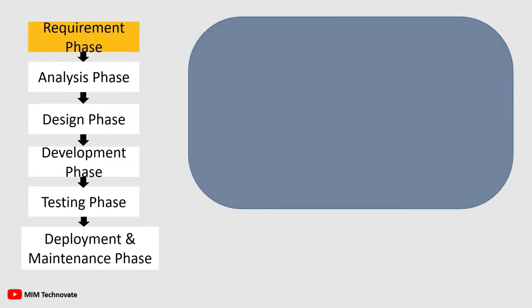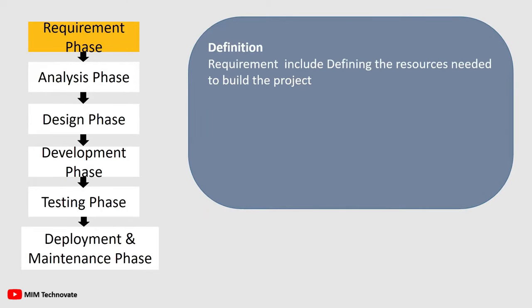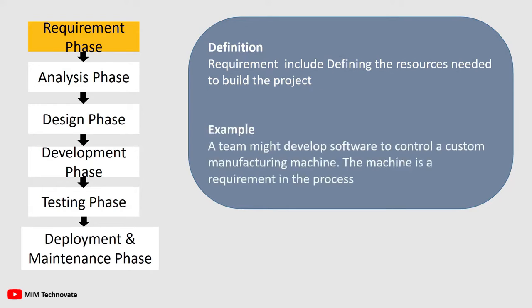Requirement Phase: This phase includes defining the resources needed to build the project. For example, a team might develop software to control a custom manufacturing machine. The machine is a requirement in the process.